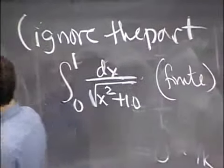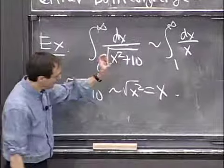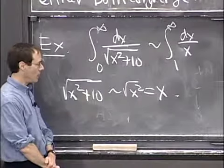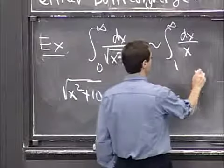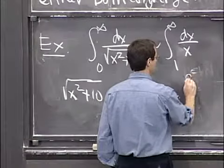Whereas, unfortunately, the integral of dx over x will have a singularity at x equals 0, so we can't make the comparison there. Anyway, this one is infinite. So this is divergent.